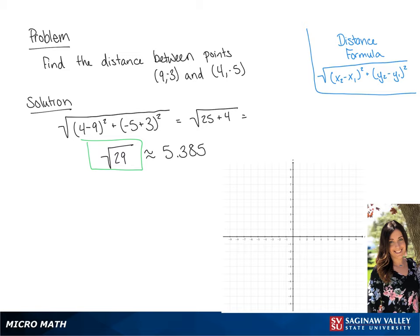Now we're going to graph our line by plotting the points in the original problem. We can draw our line, and the distance between these two points is the square root of 29.